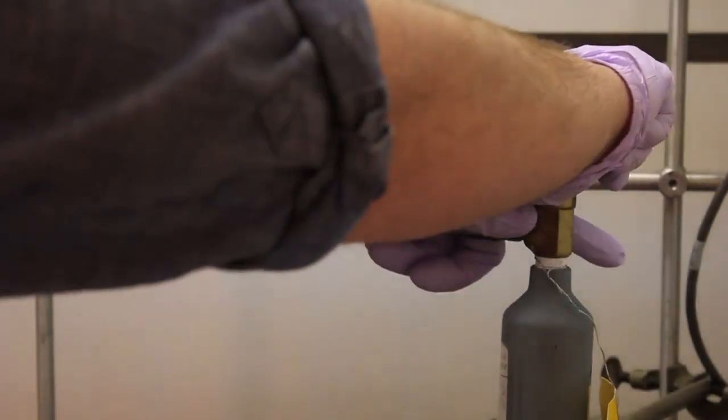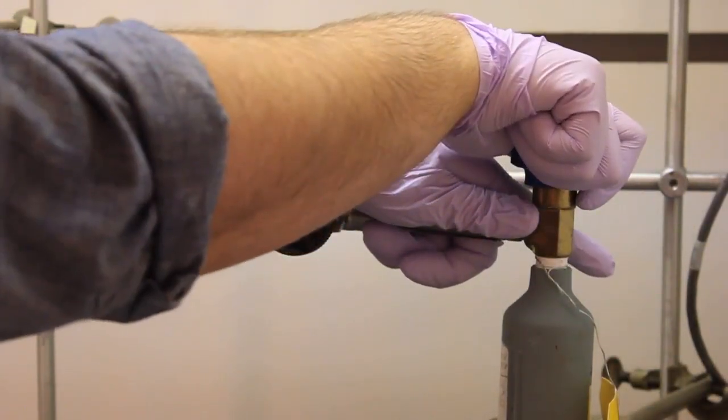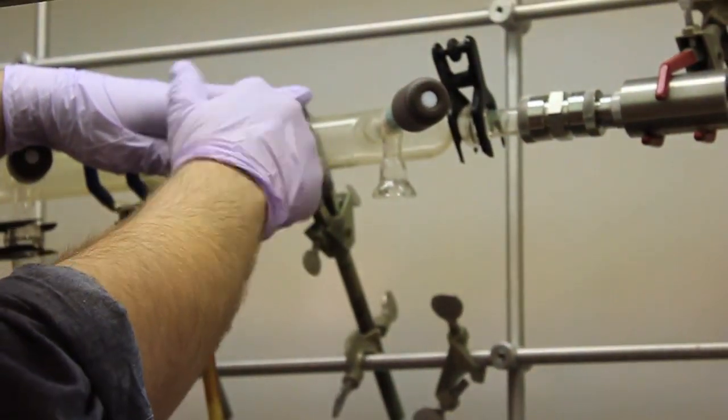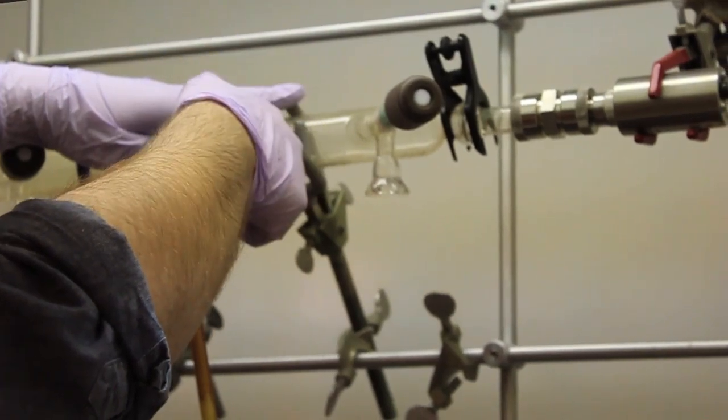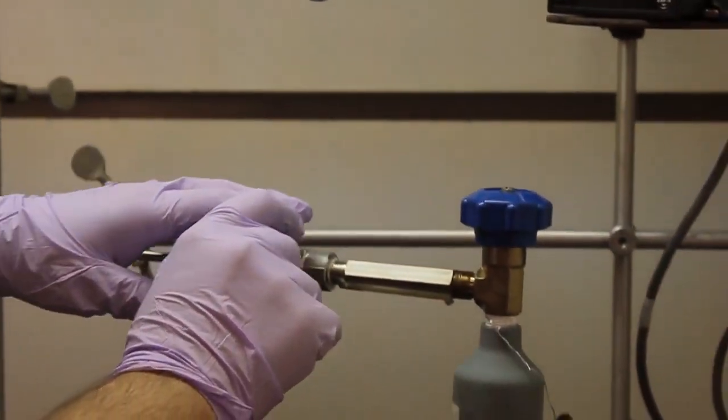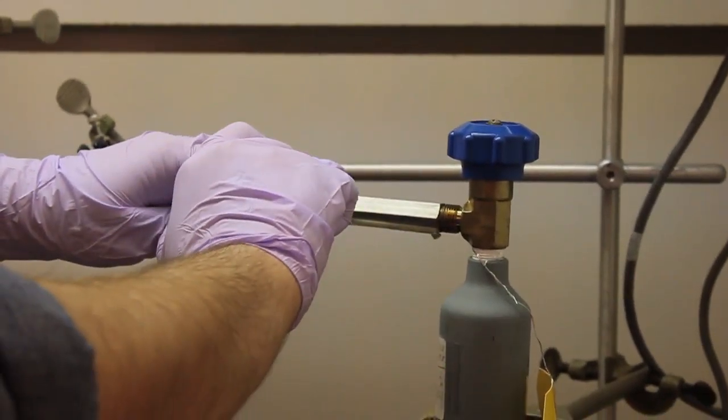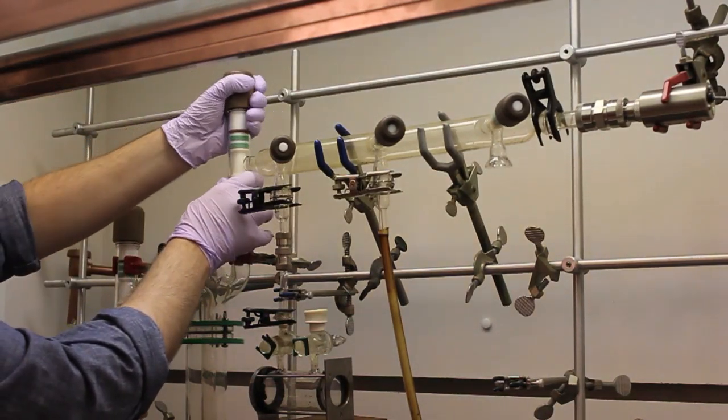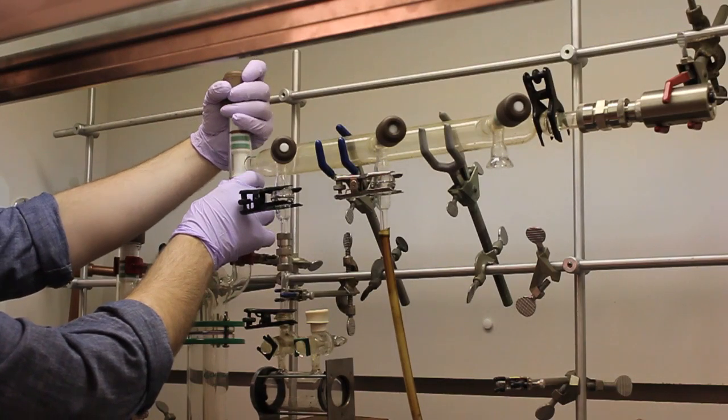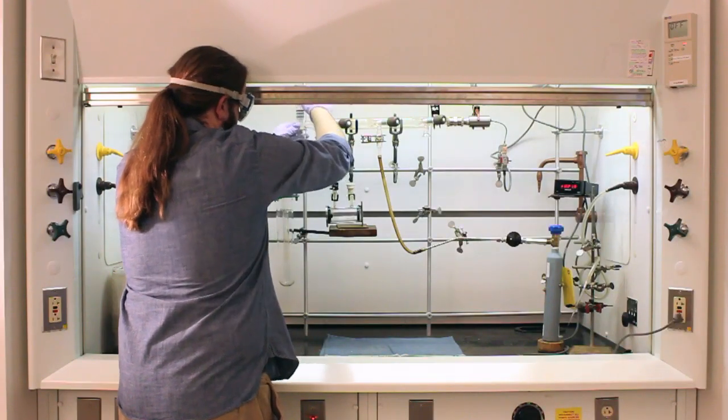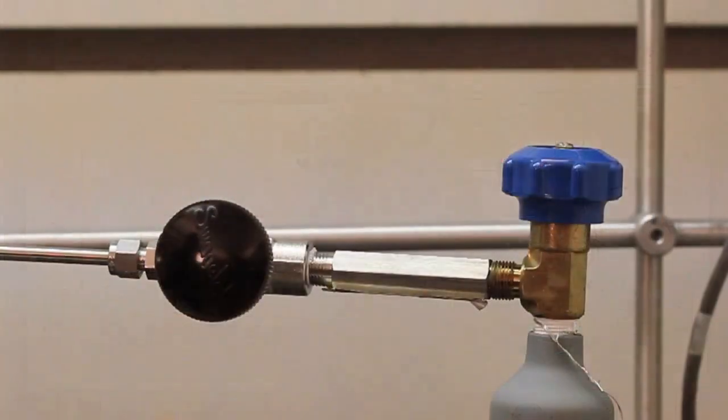Ensure the main valve to the lecture bottle is closed. After ensuring the manifold valve is open, you can open the needle valve to the lecture bottle. The pressure should fall to less than 30 torr. Next, close the valve to the cold trap. With the sample cell and manifold under vacuum, you are now ready to fill your sample cell with the HCl-DCl mixture.